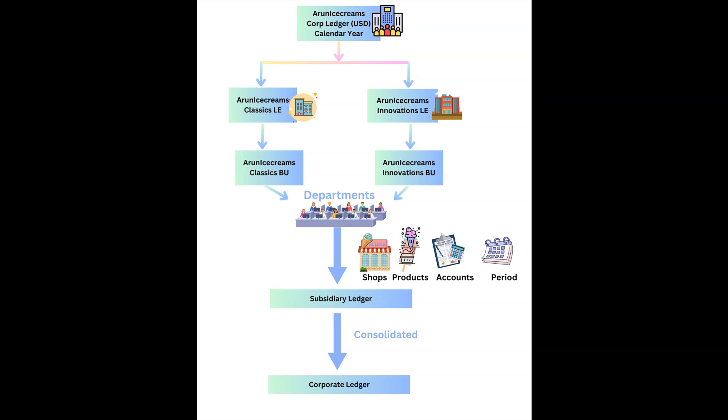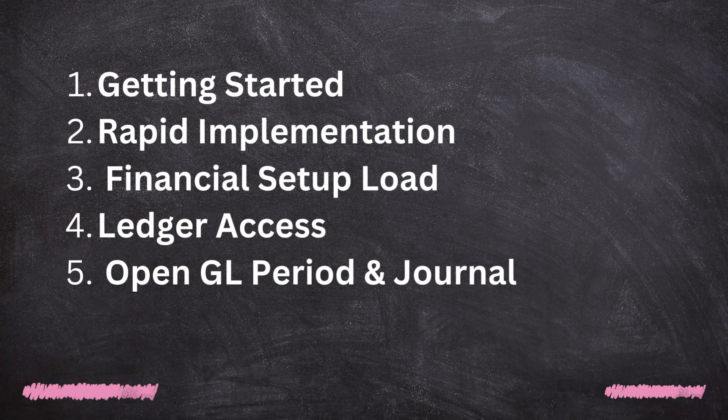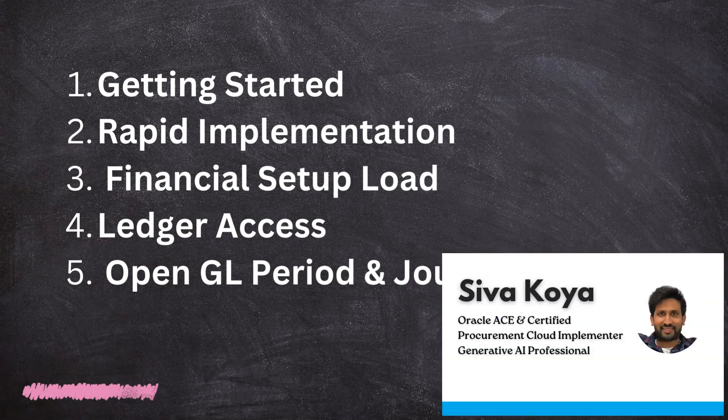Here is a quick overview of the setup process. We will start by assigning the required roles to our profile and going through the setup task list. Next, we will download the rapid implementation spreadsheet and populate it with our company's setup data. After that, we will load this data into the Oracle Fusion application, grant data access to our newly created ledger, and open our first GL period to create our first journal — all in less than 15 minutes.